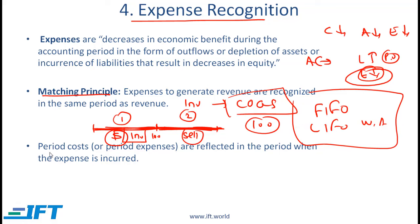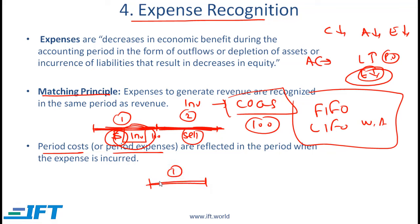We have a type of cost called period cost or period expenses. These are simply reflected in the period when the expense is incurred. A classic example would be rent or electricity-related costs, where it does not make sense to capitalize those costs. What we did with inventory was capitalize the cost — capitalize means we create an asset. But if you have a rent cost for period 1, it makes no sense to capitalize it. So rent is an example of a period cost that is simply shown as an expense for the period where it happened.